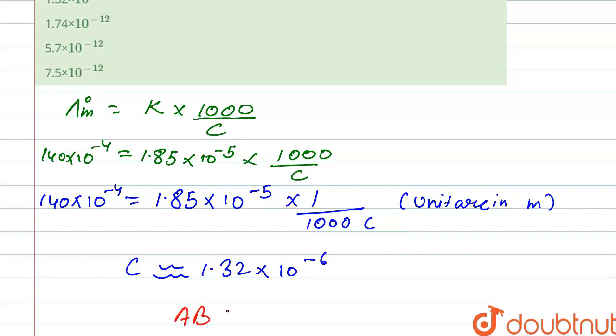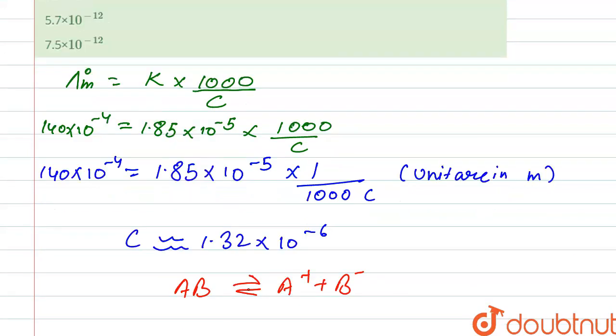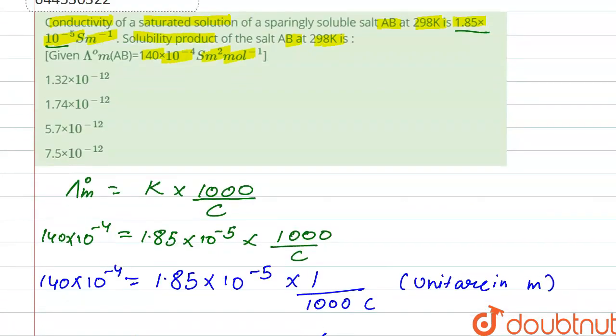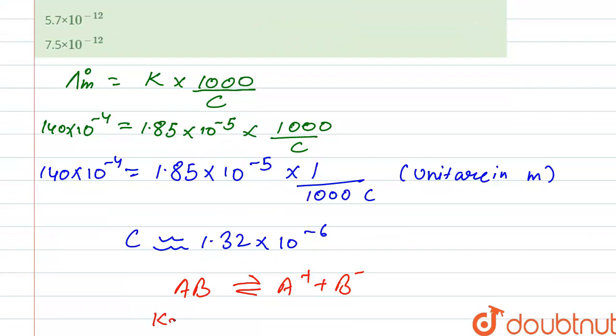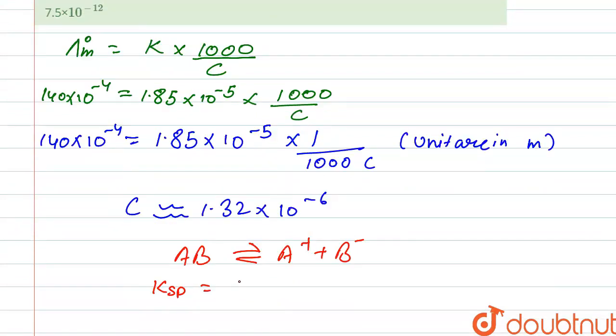And when AB gets dissociated at equilibrium, it forms A^+ plus B^-. So here solubility product, we have to find solubility product, that is Ksp for this reaction, is written as [A^+] at equilibrium... so it is written as C at equilibrium.